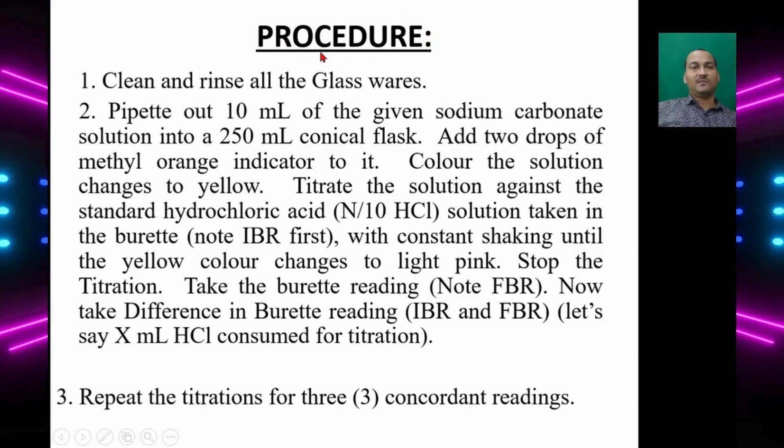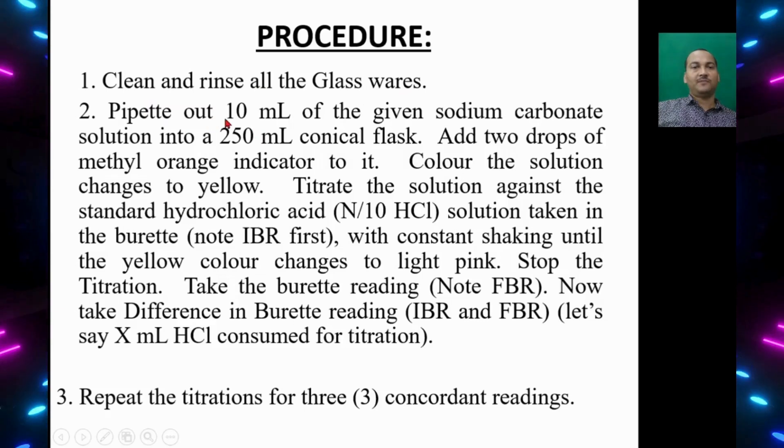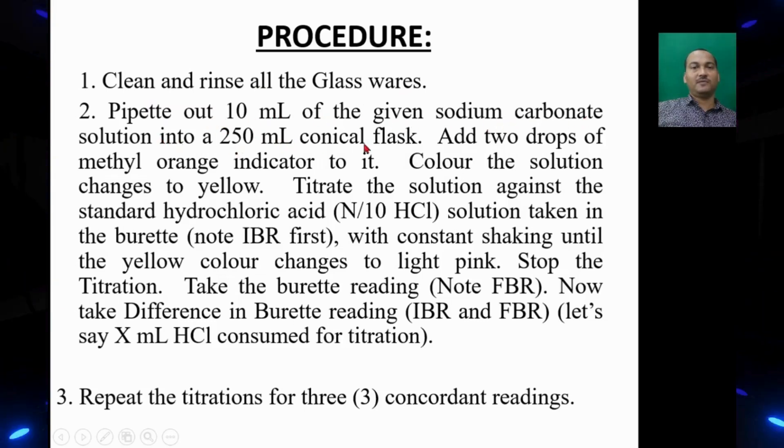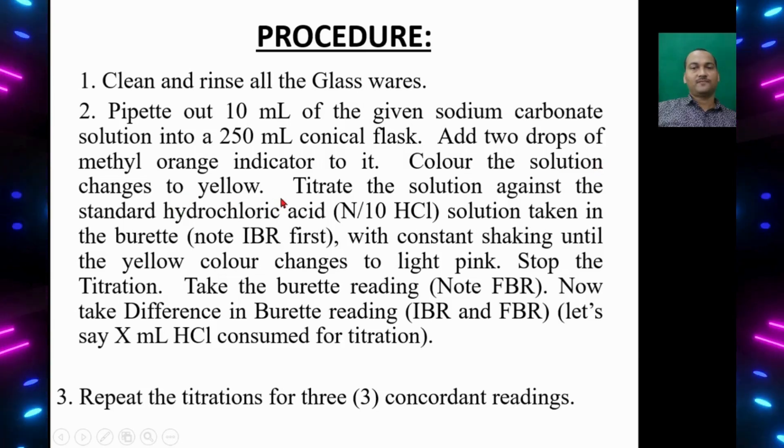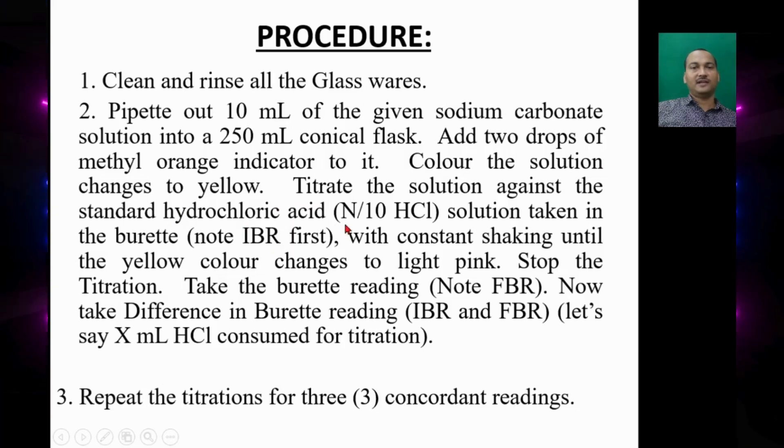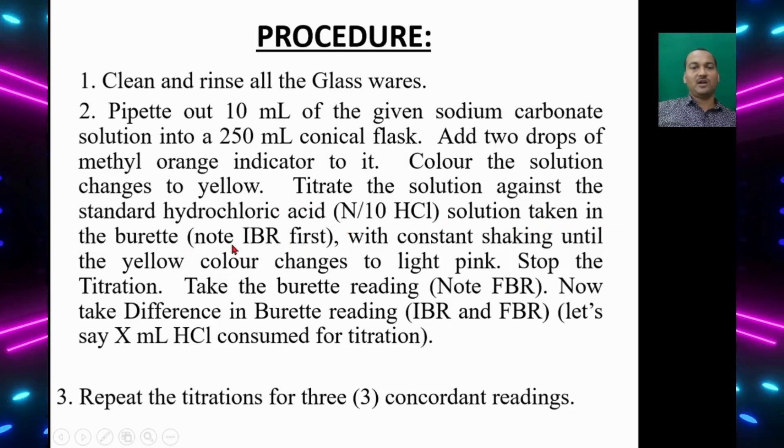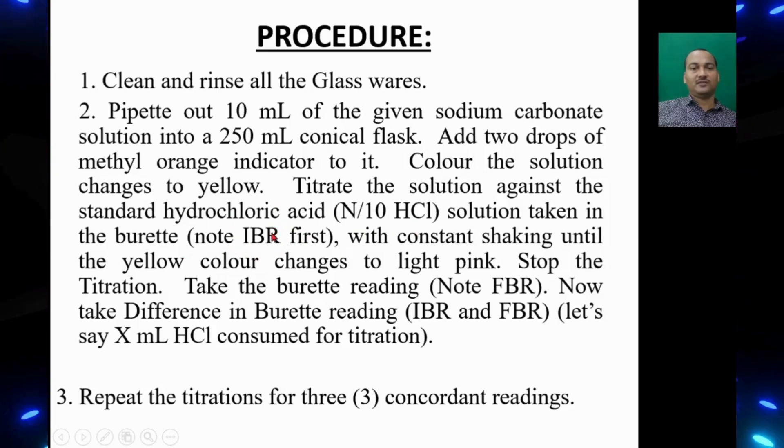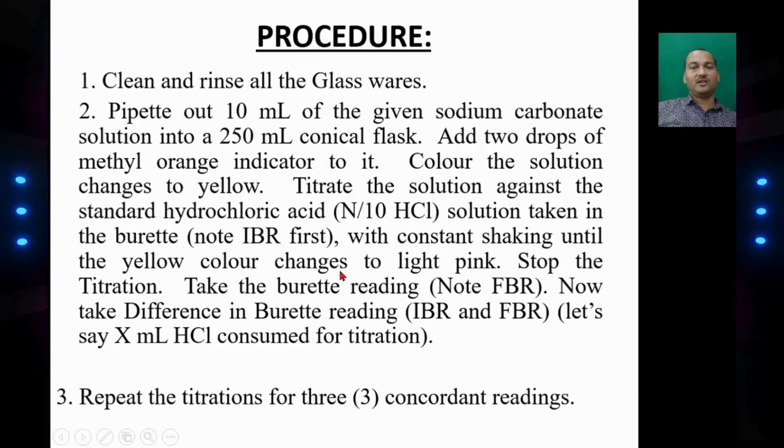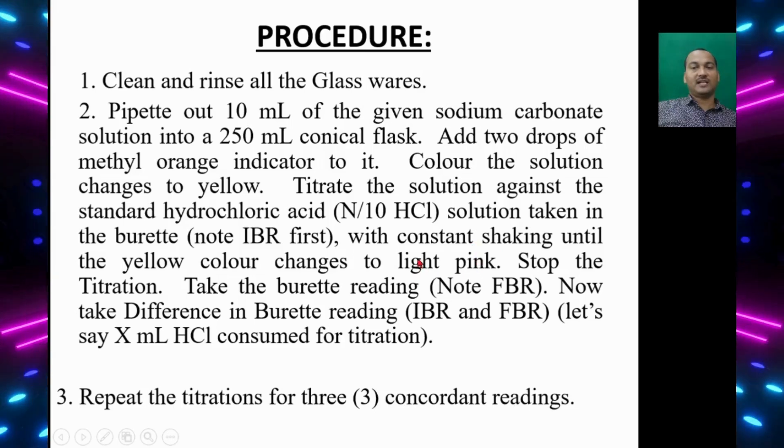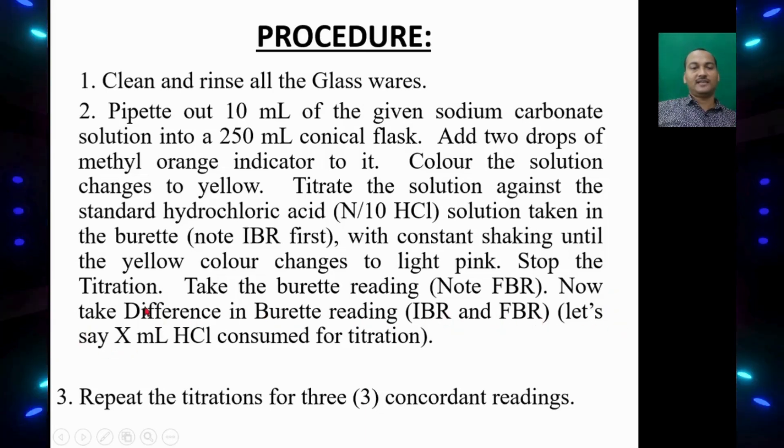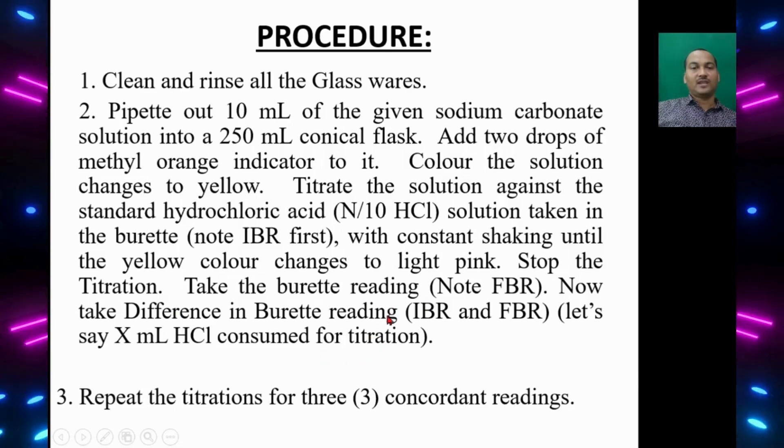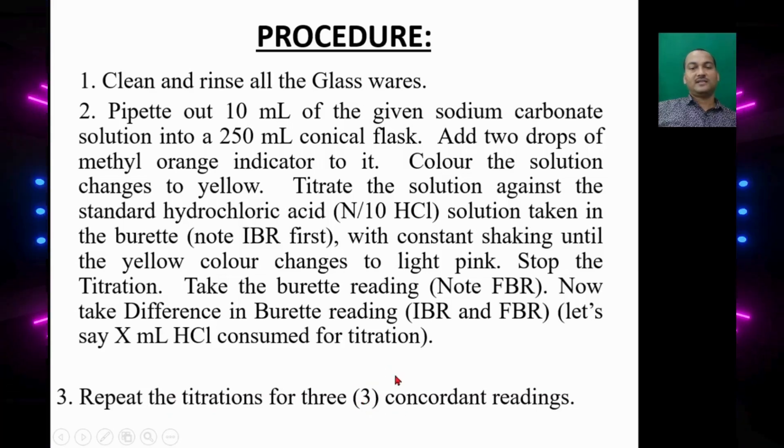Let's discuss the procedure. First clean and rinse all the glassware. Then pipette out 10 ml of given sodium carbonate solution into 250 ml conical flask. Add two drops of methyl orange indicator to it. The solution changes to yellow. Then titrate the solution against standard N by 10 HCl solution taken in the burette. Note down the initial burette reading. With constant shaking until the yellow color changes to light pink color, this is the endpoint of titration. Stop the titration and take the final burette reading FBR. Take the difference, FBR minus IBR, that is the volume of HCl consumed. Repeat the same titration for next three concordant readings.